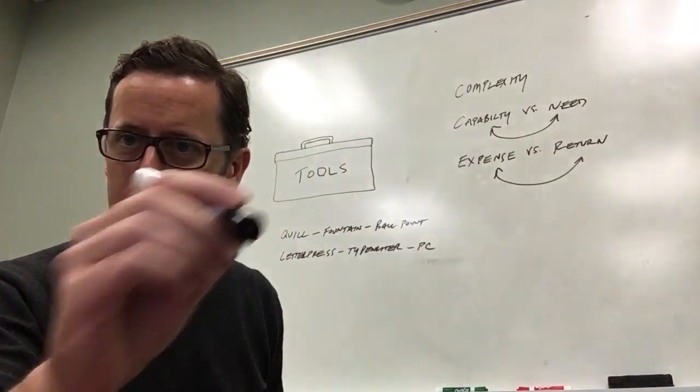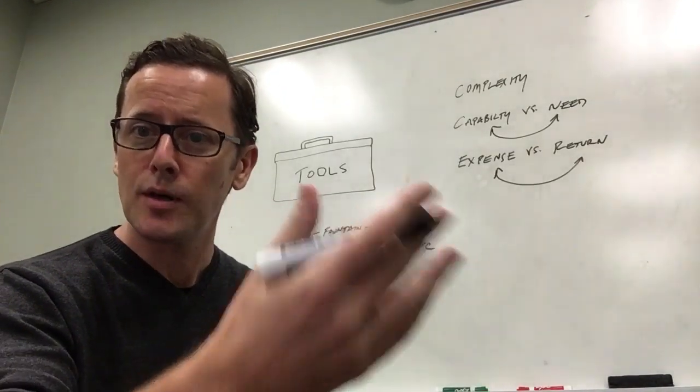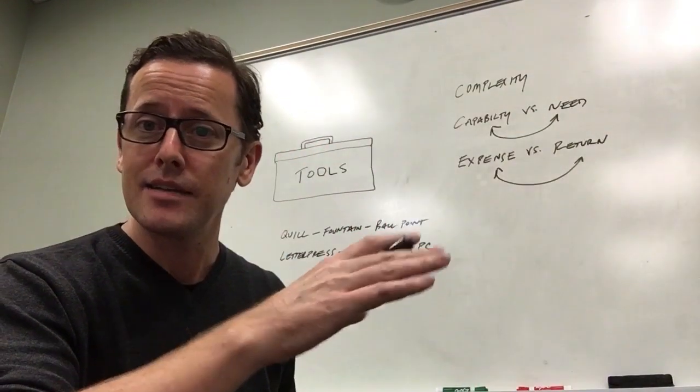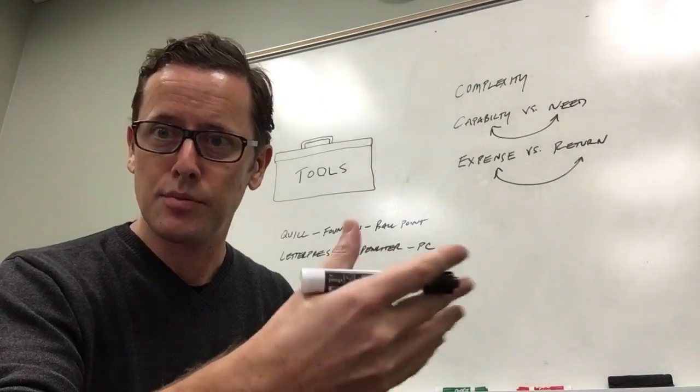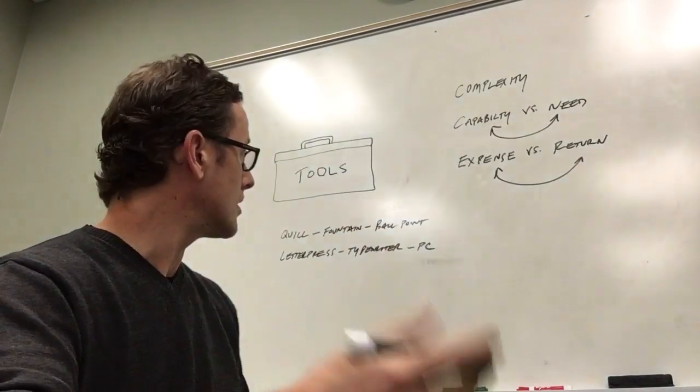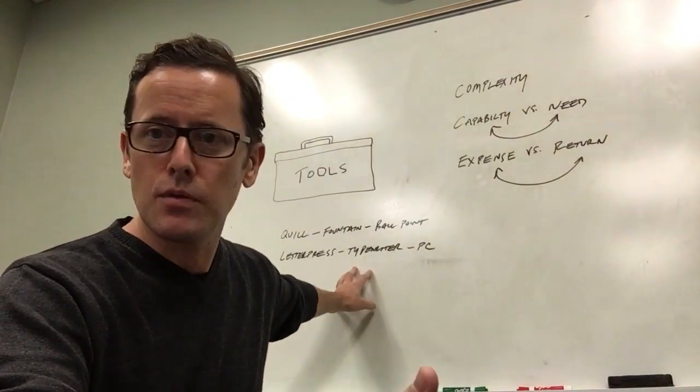We wrote with a quill and dipped it in an inkwell, then we had fountain pens, then ballpoint pens. A long time ago we had a letterpress if we needed to print something, then typewriters, then PCs with printers. And on and on. It's just office equipment, just tool supplies.